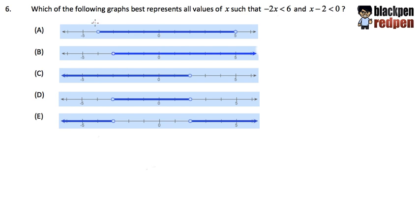For question number 6, we are going to figure out which of the following graphs represents all values of x such that -2x < 6 and x - 2 < 0. As we can see, we have two inequalities.